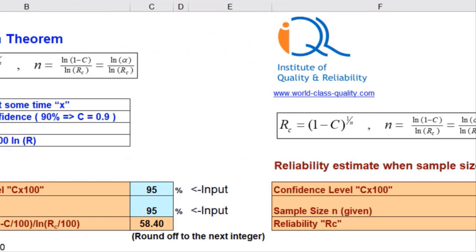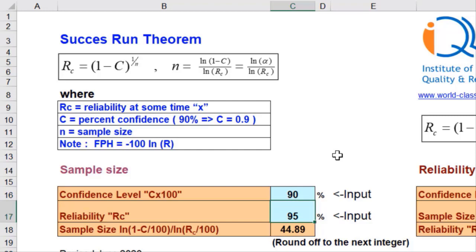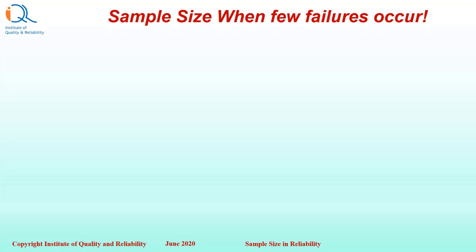That turns out to be about 45. You don't need to work like this manually — you also have the option of finding the sample size directly. On the left side of the template, you can enter a confidence level of 90 and reliability of 95 to get a sample size of 44.89. Round up to the next integer: that is 45.